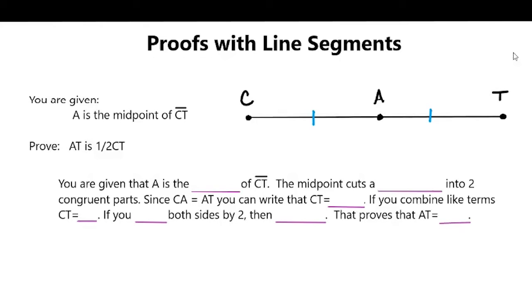So you are given that A is the what of CT? Well, A is the midpoint of CT. The midpoint cuts a blank into two congruent parts. All right, so the midpoint cuts a line segment into two congruent parts.